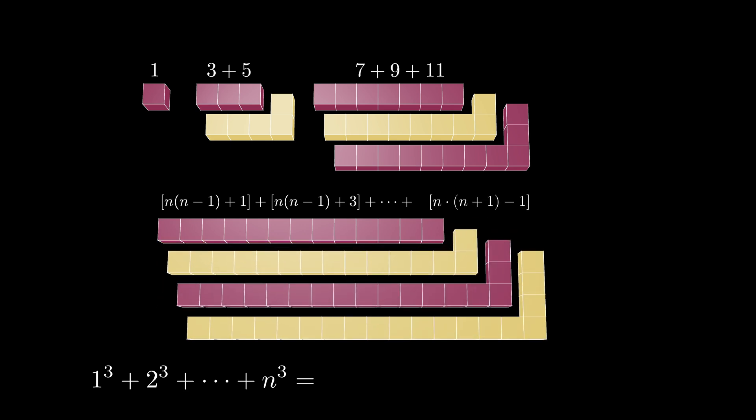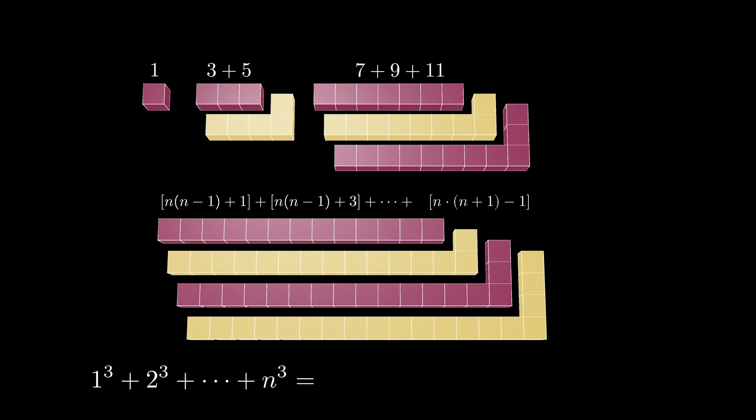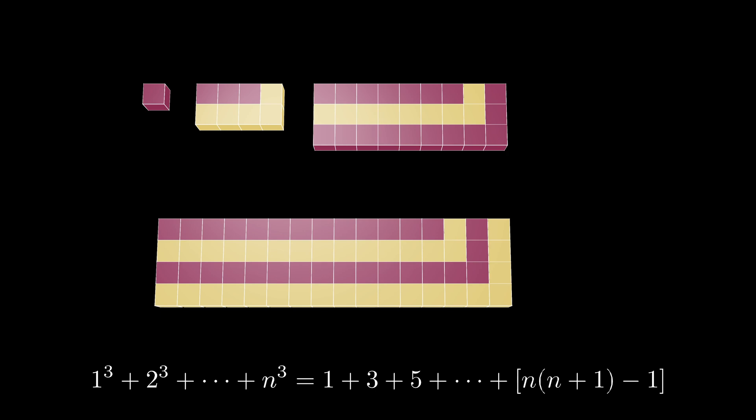From these rectangular diagrams, then, we see that the sum of the first n positive cubes is equal to the sum of the odd integers starting from 1 and ending at n times n plus 1 minus 1. This formula is amazing, but we can use these rectangles to say even more.